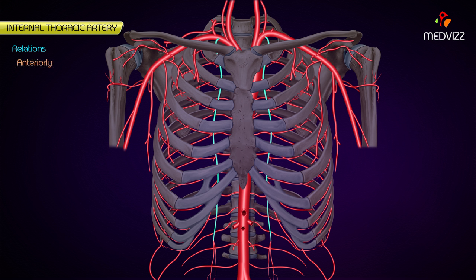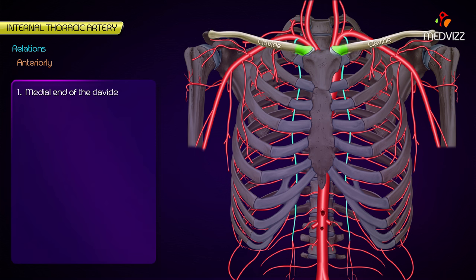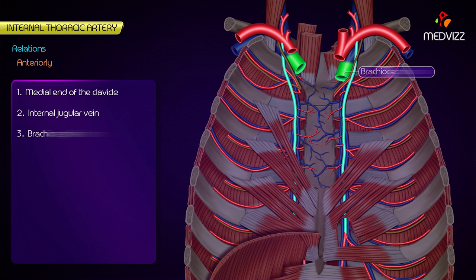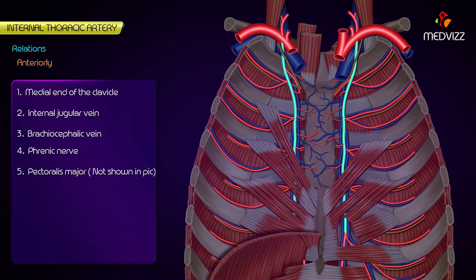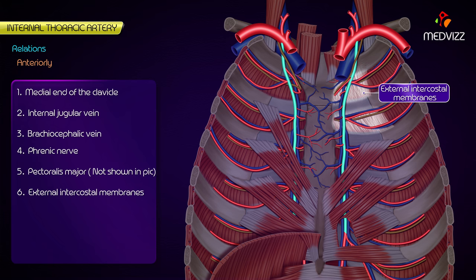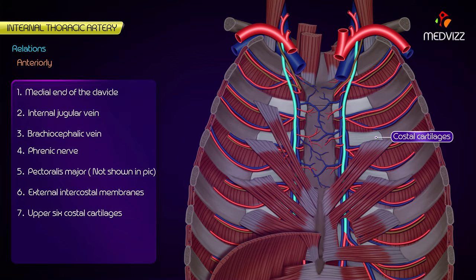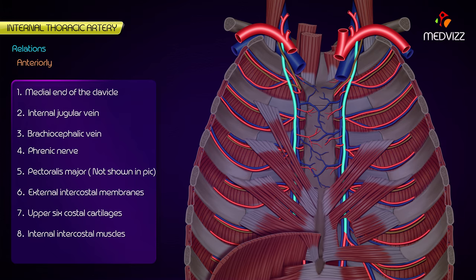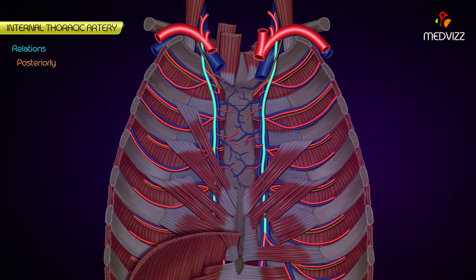Anteriorly, from above downwards, it is related to the medial end of the clavicle, internal jugular vein, brachiocephalic vein, phrenic nerve, pectoralis major, external intercostal membranes, upper six costal cartilages, internal intercostal muscles, and upper six intercostal nerves.